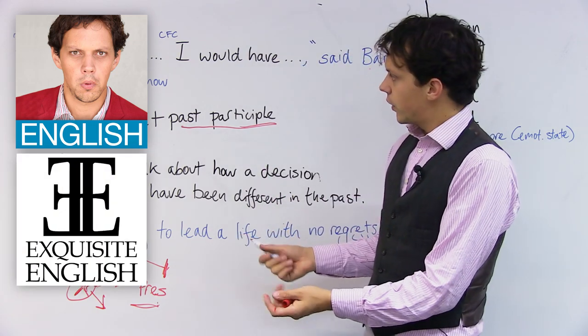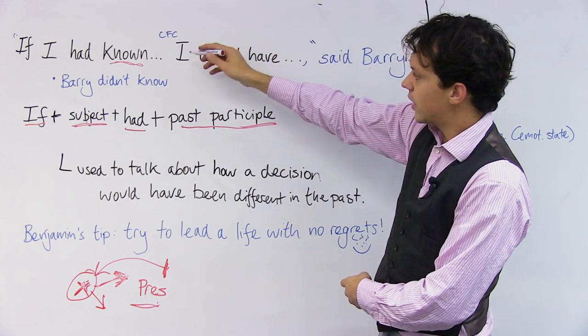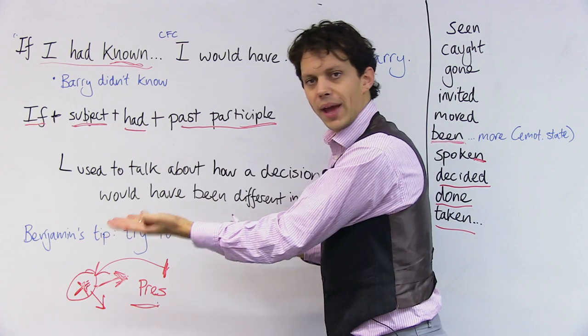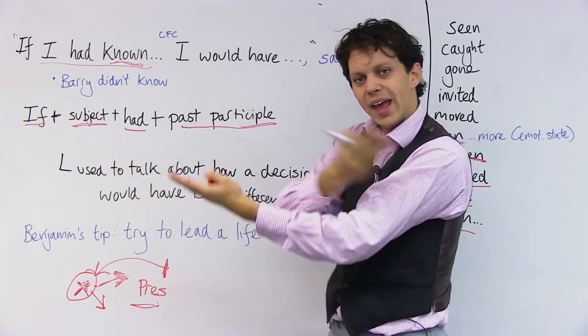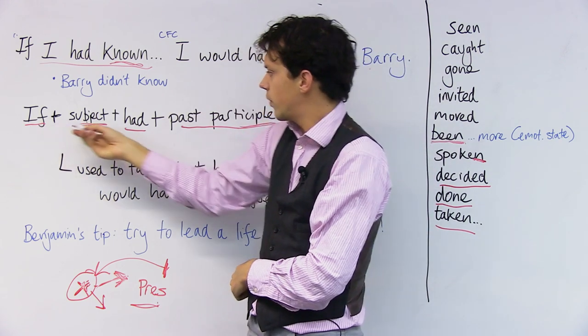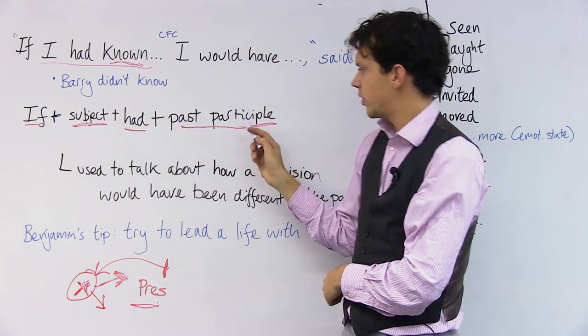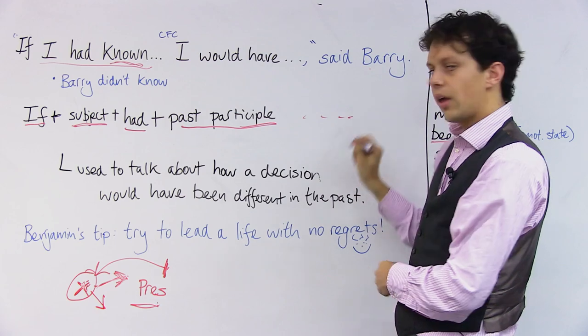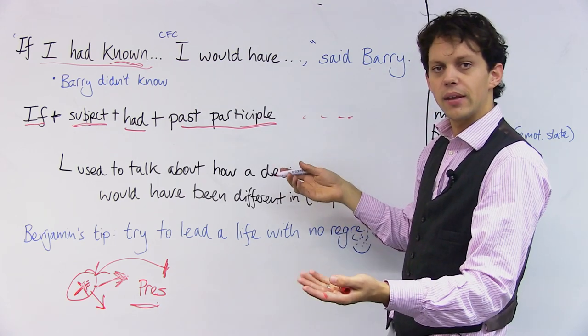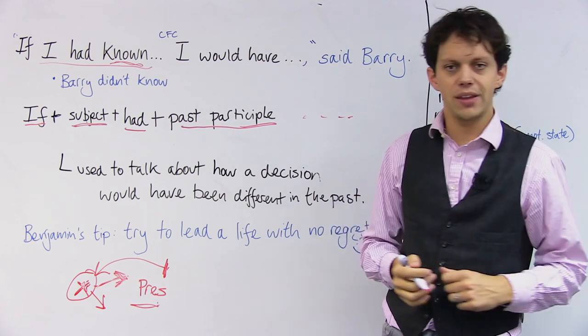I hope today's made sense for you. What I've tried to tell you is that this is a two-part phrase looking back into the past and then how life would have been different. Don't forget to use if subject had past participle and then it's normally followed by would have been. What the result is.